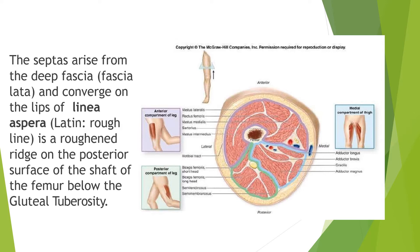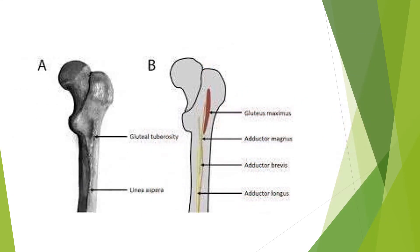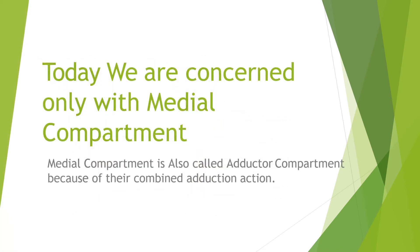The septa arise from the deep fascia or fascia lata and converge on the lips of the linea aspera. Linea aspera is a Latin word meaning 'rough line.' It is a roughened ridge on the posterior surface of the shaft of the femur, below the gluteal tuberosity. Today we are concerned only with the medial compartment.